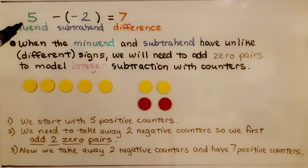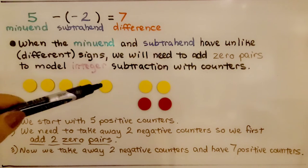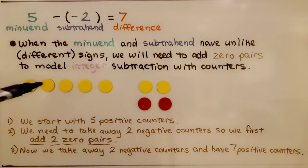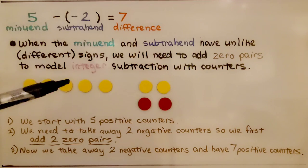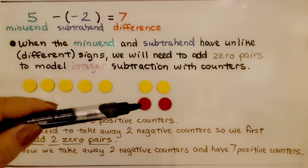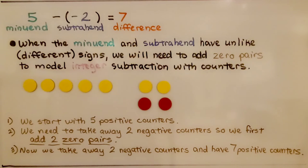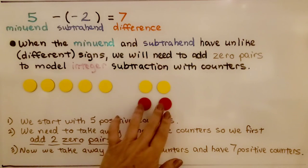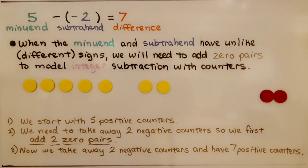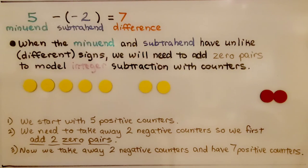We have positive five and we're subtracting negative two. We start with five positive counters, and there are no negative counters to take away, so we first add two zero pairs: a positive and a negative, and a positive and a negative. We take away the two negative counters, and we're left with seven positive counters. So five minus negative two is equal to seven.